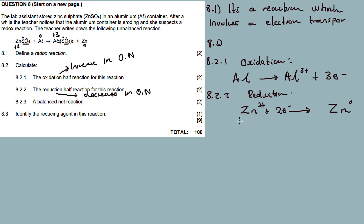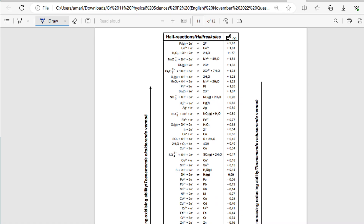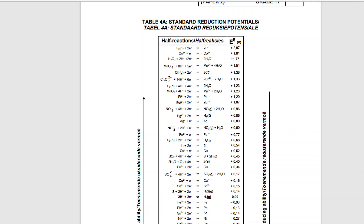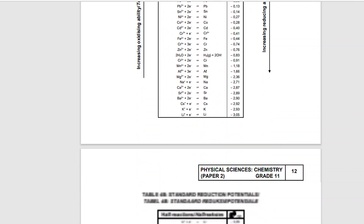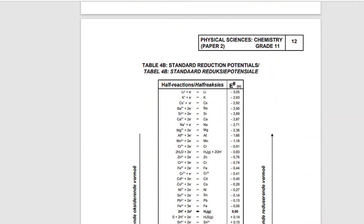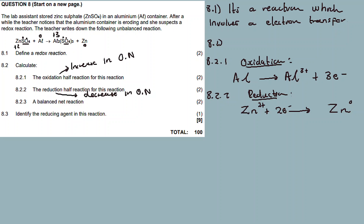You can also consult a table to find oxidation and reduction half reactions. I prefer to work it out this way, but you can go ahead and consult the standard reduction potential tables for your answer.